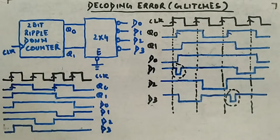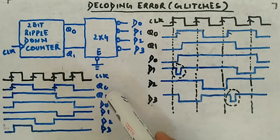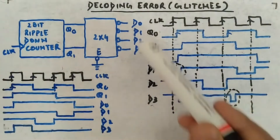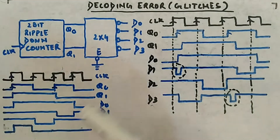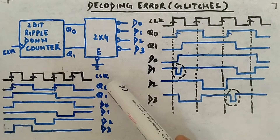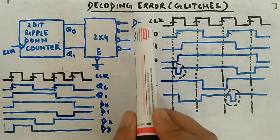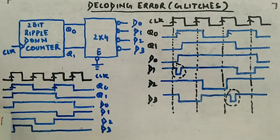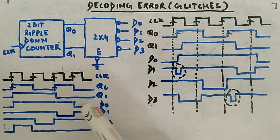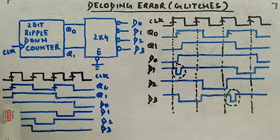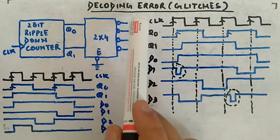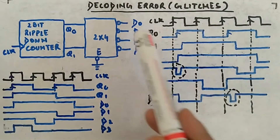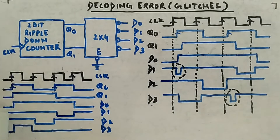Q1 will change its state when there is a positive edge in Q0. So Q0 and Q1 are generated, and depending on their values, the decoder outputs are generated. When Q1 is MSB and Q0 is LSB: for 00, D0 will be zero and it is zero here, and the rest of the time it is one. Whenever Q1 Q0 is zero zero, D0 is activated — meaning D0 becomes zero and all others become one.